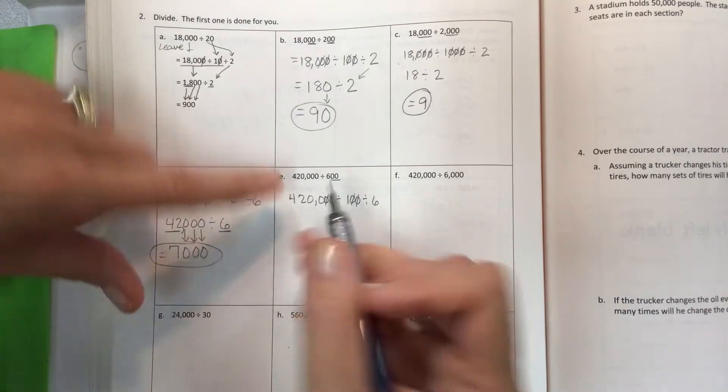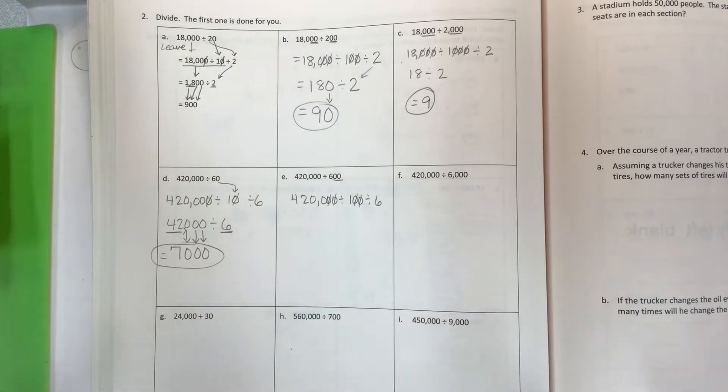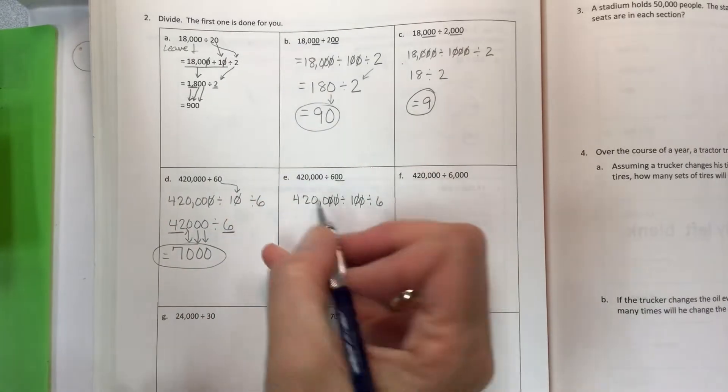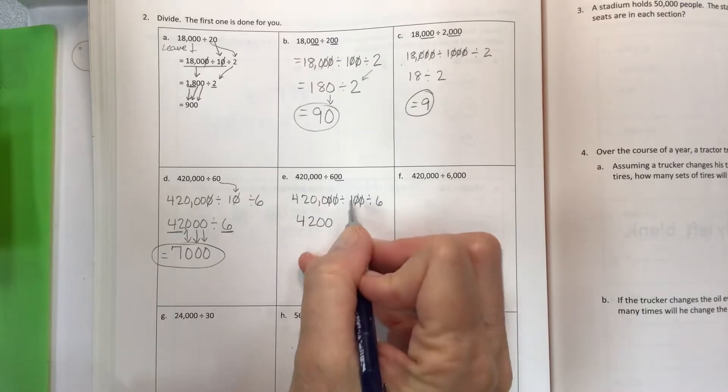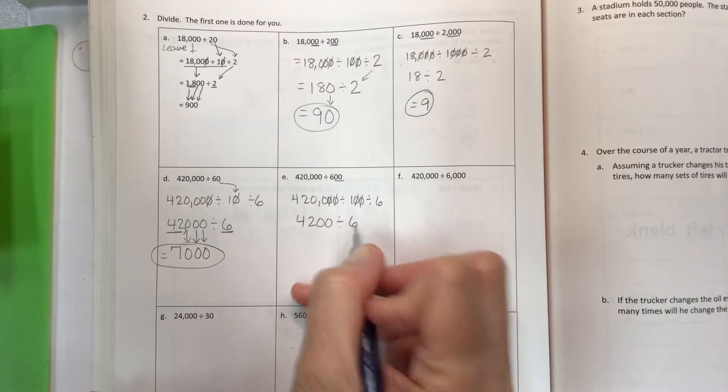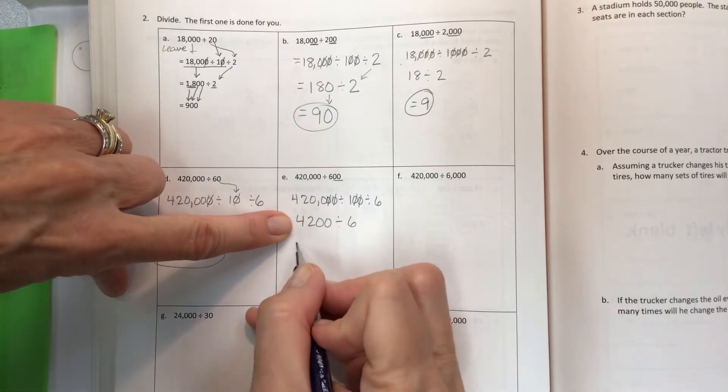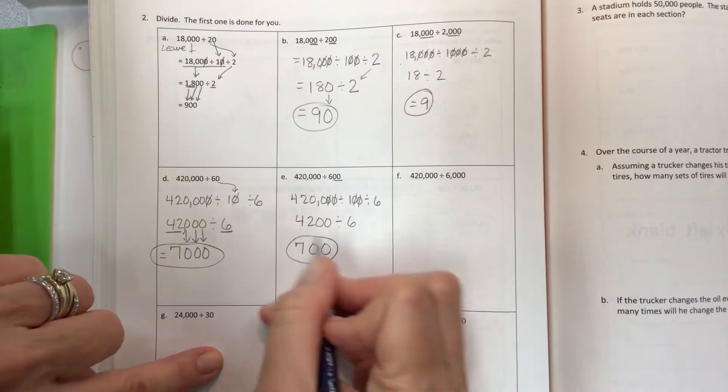It was 420,000, but we're going to offset the zeros. I have 4, 2, 0, 0 divided by 1. Divided by 6. 42 divided by 6 is 7. Bring down your zeros for 700.